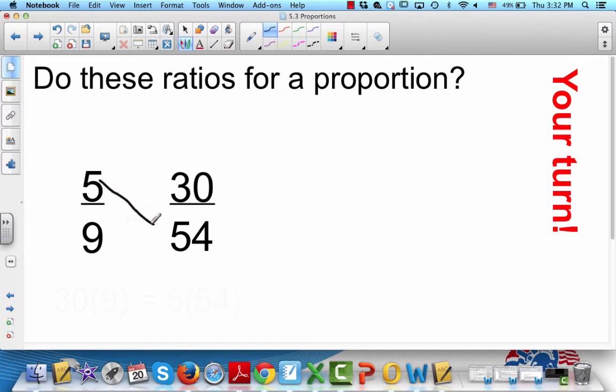So we go 5 times 54, that's 270. And 9 times 30, that's 270. So yes, this is a proportion.